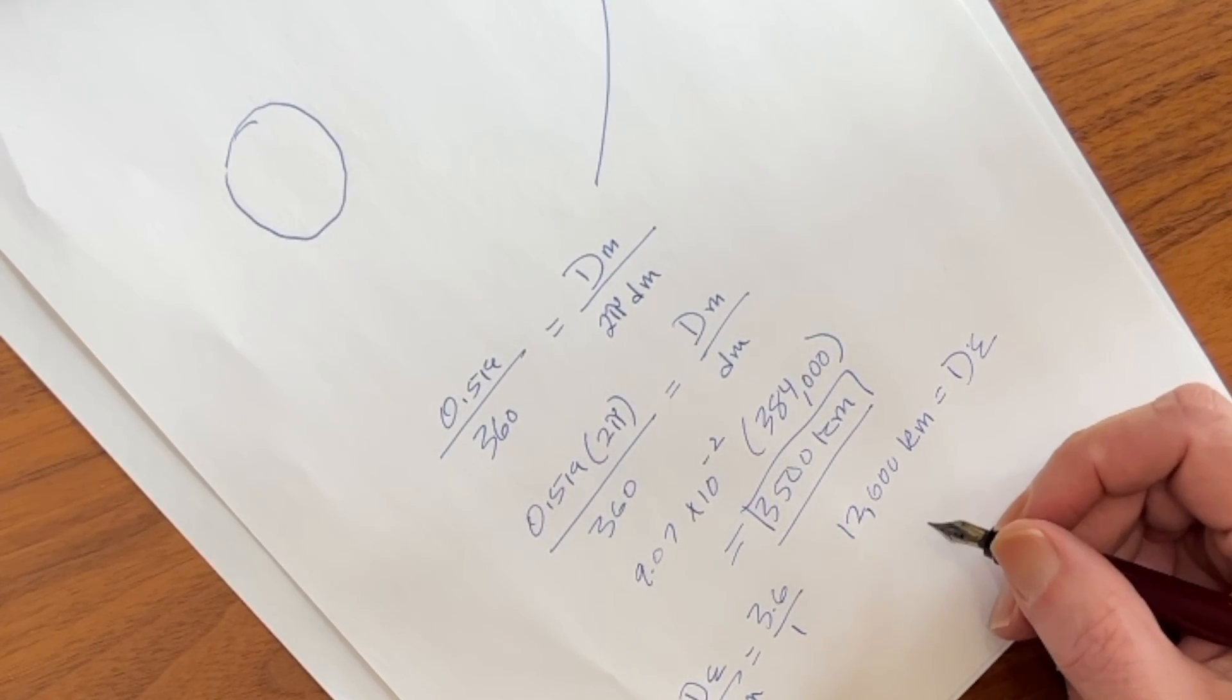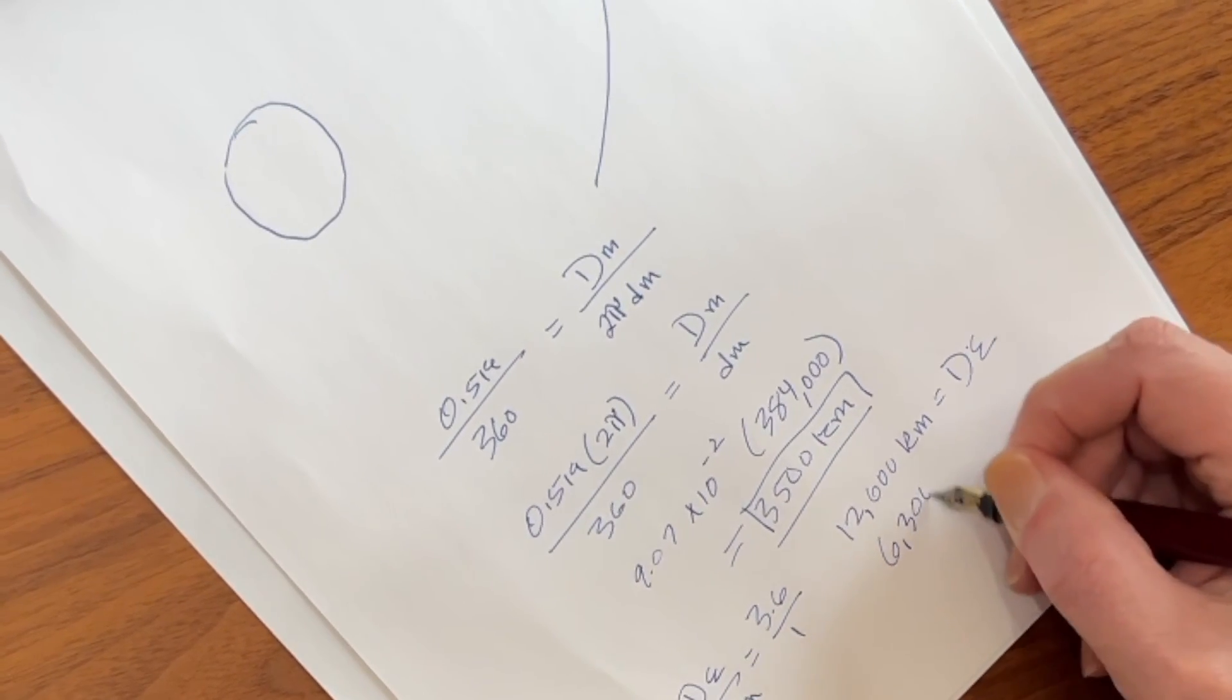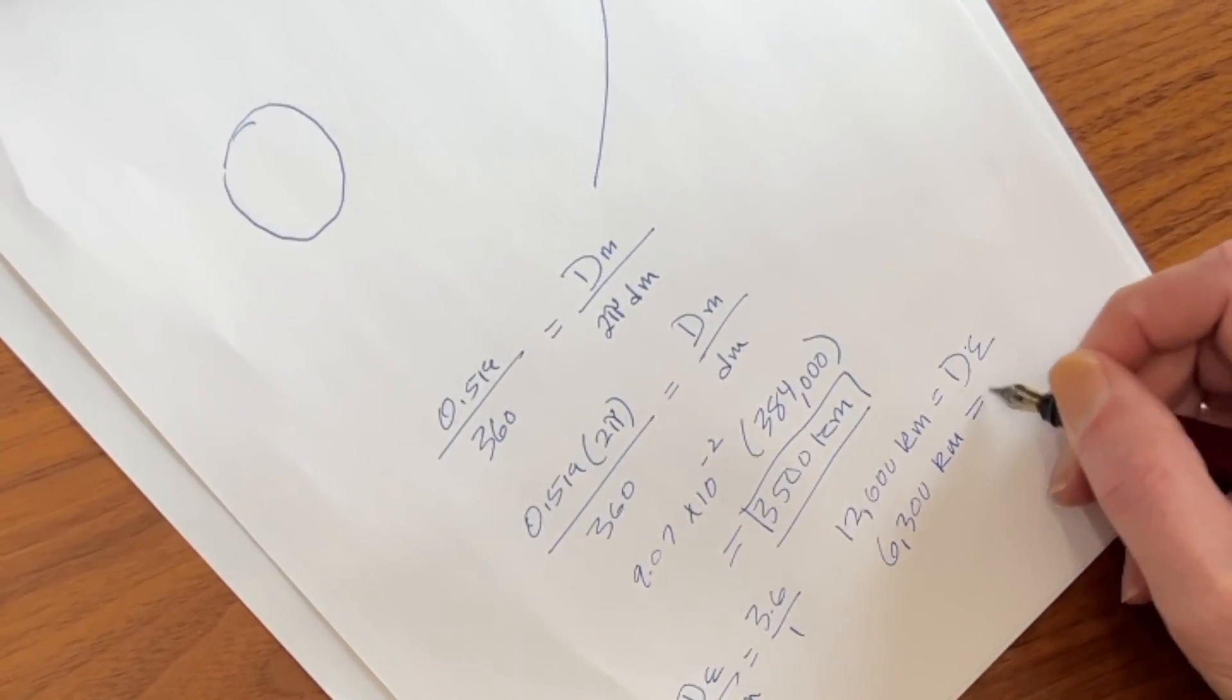Now if we divide this by 2, we get 6,300 kilometers equals the radius of earth.